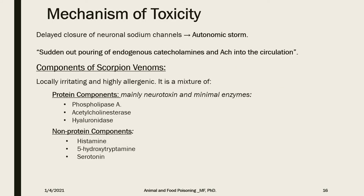The mechanism of toxicity involves delayed closure of neuronal sodium channels, leading to an autonomic storm — a sudden outpouring of endogenous catecholamines and acetylcholine into the circulation. Scorpion venom components divide into protein and non-protein components. The venom is highly irritating and allergenic. Protein components are mainly neurotoxins, with a minimal amount acting as enzymes — examples include phospholipase A, acetylcholinesterase, and hyaluronidase. Non-protein components include histamine, 5-hydroxytryptamine, and serotonin.